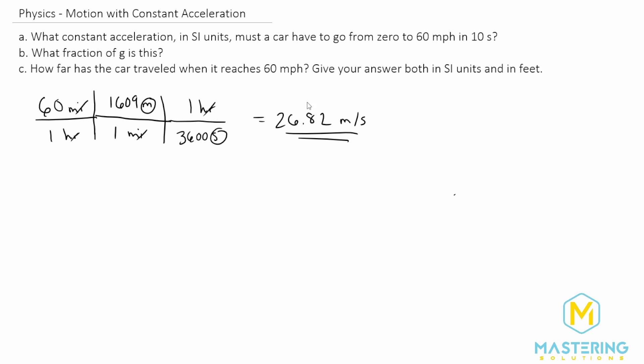So now that we have this in SI units, we can go ahead and figure out for part a what the acceleration needs to be to go from 0 to 60 in 10 seconds. Acceleration is equal to the change in velocity over the change in time.